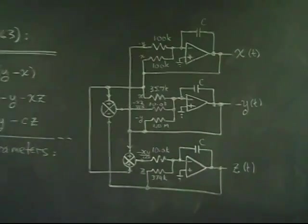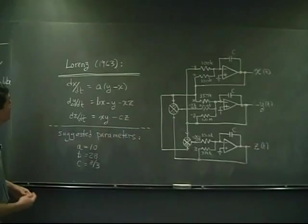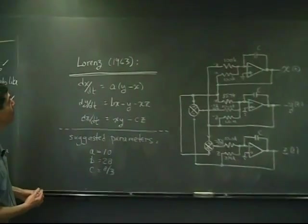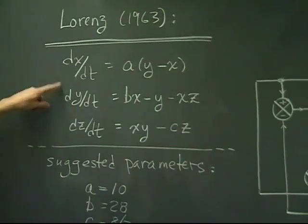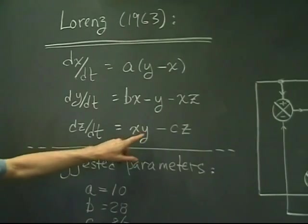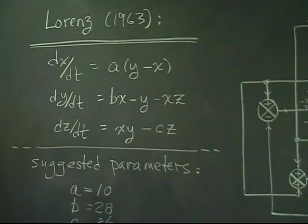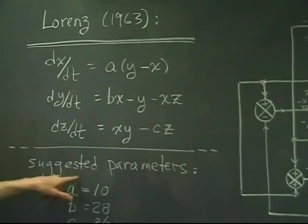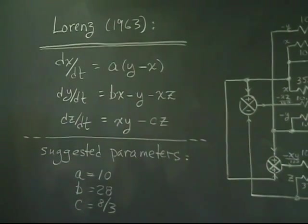To go to the equations that I'd like to illustrate here today with the circuit, this is a set of equations that was published in 1963 in the Journal of Atmospheric Chemistry by Edward Lorenz. It consists of three first order differential equations. They're non-linear. They have terms like xy and xz in them. It's a system of equations in x, y, and z. a, b, and c are constant coefficients and the suggested parameters that Lorenz gave were these particular values.